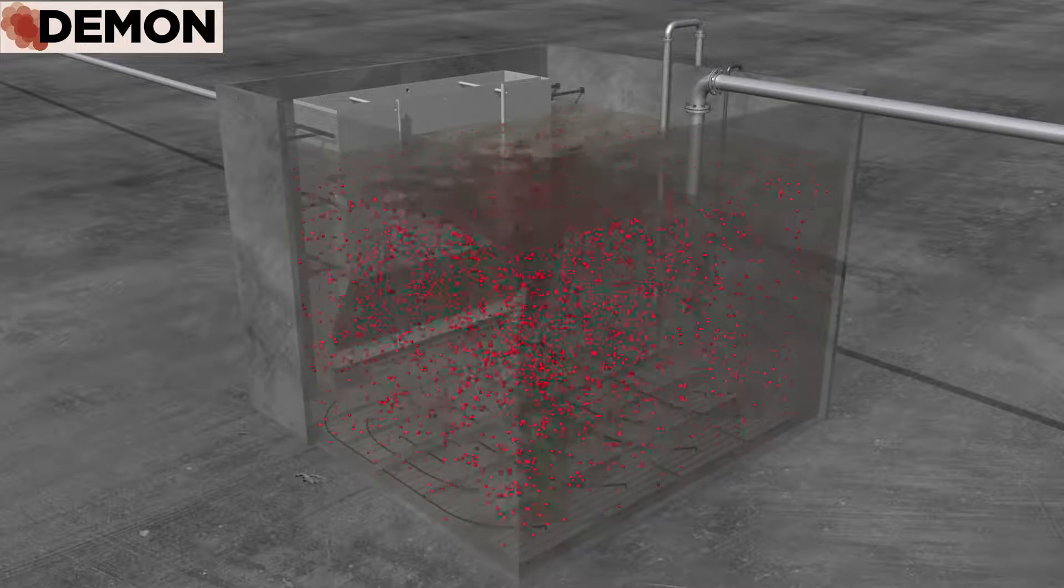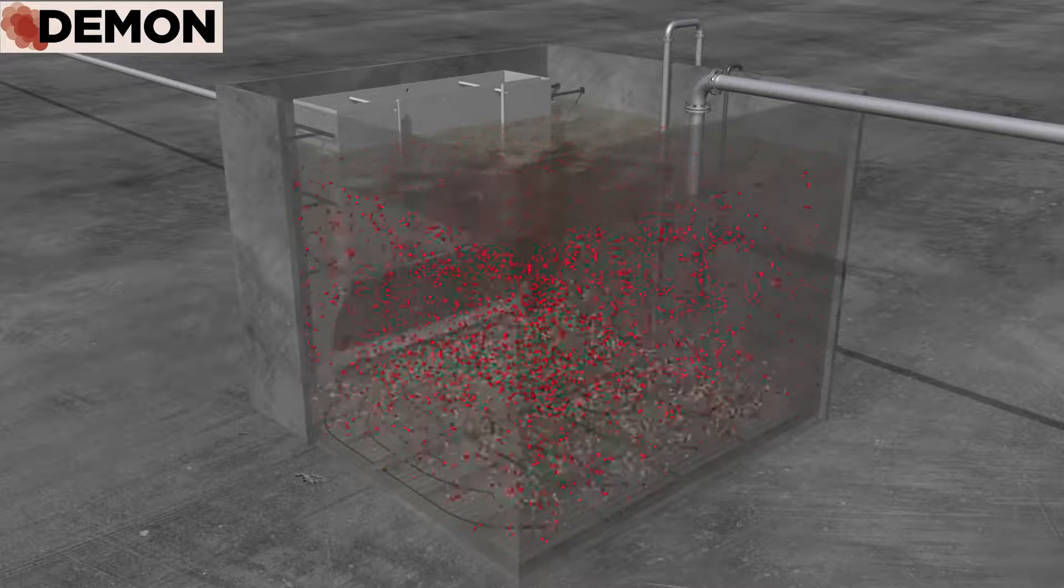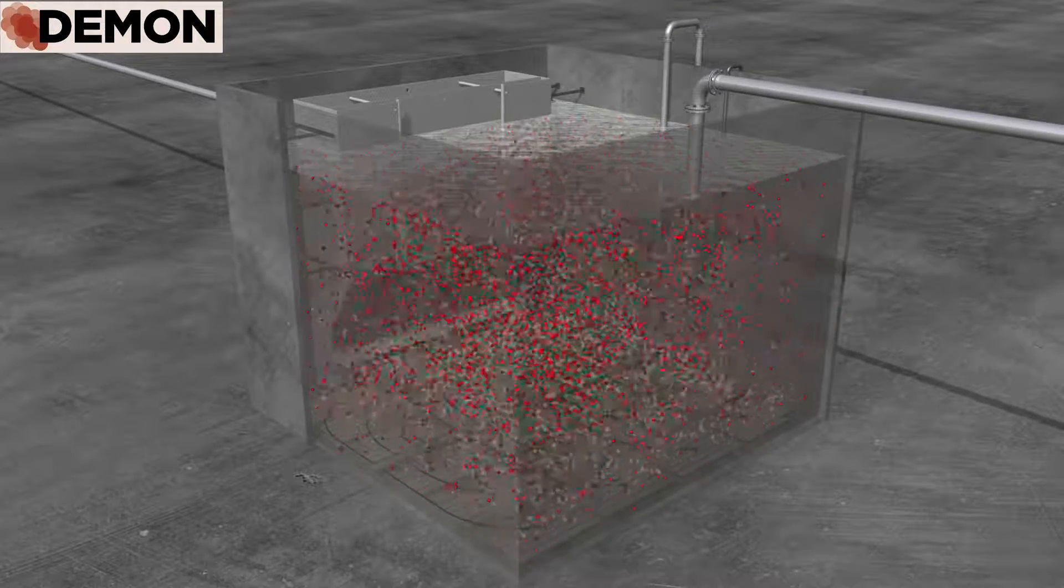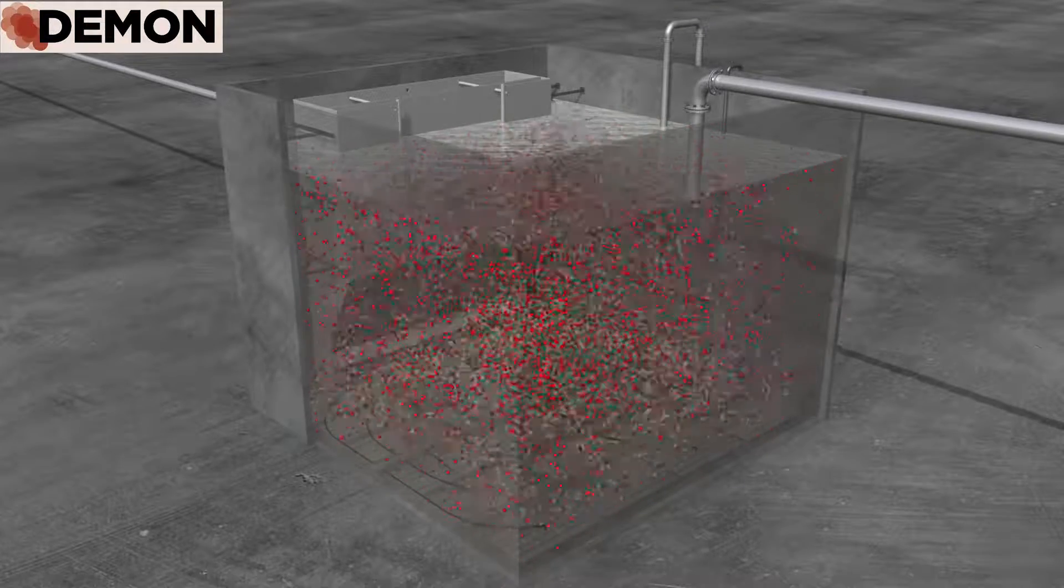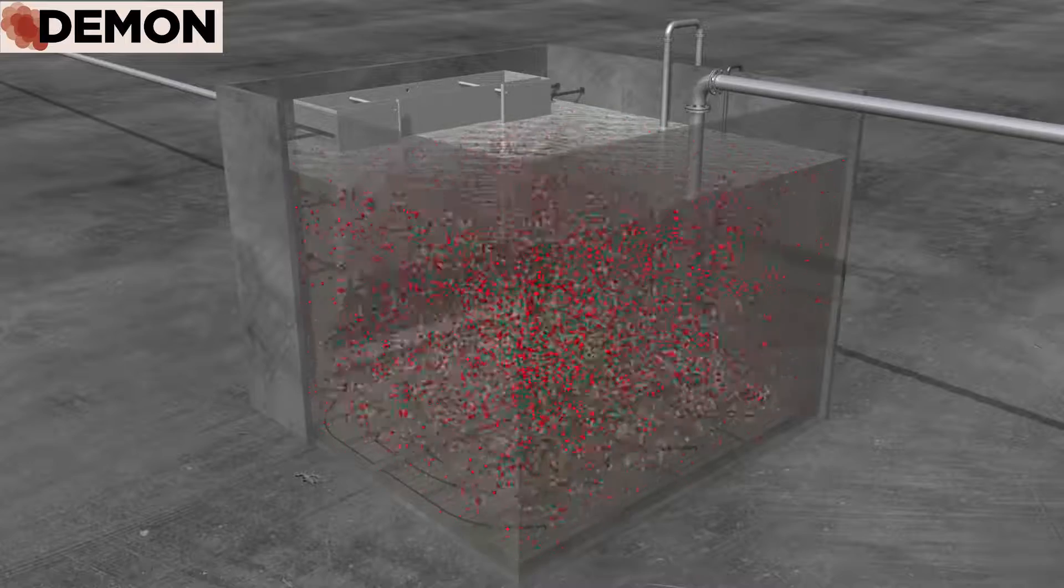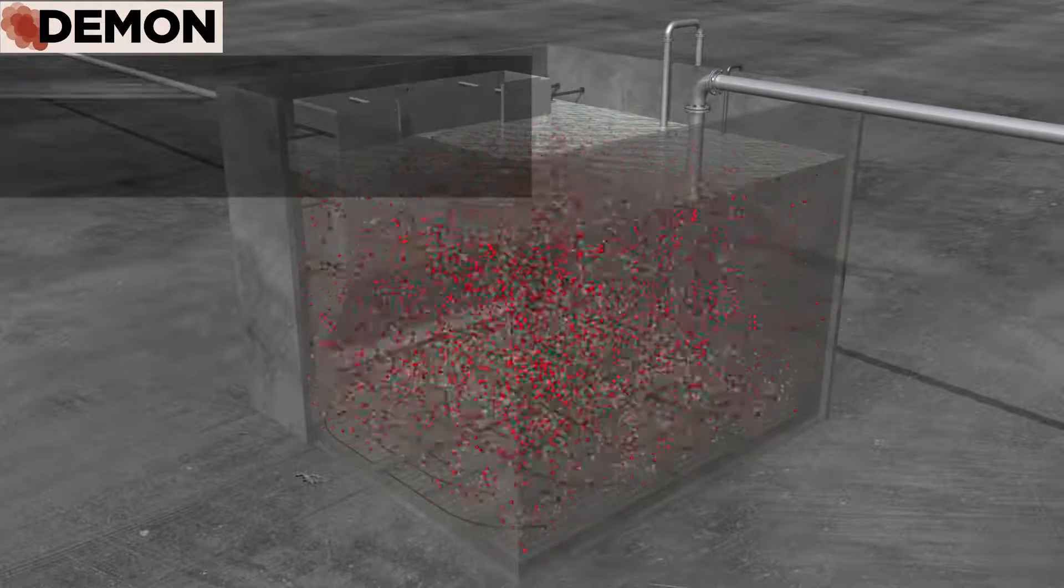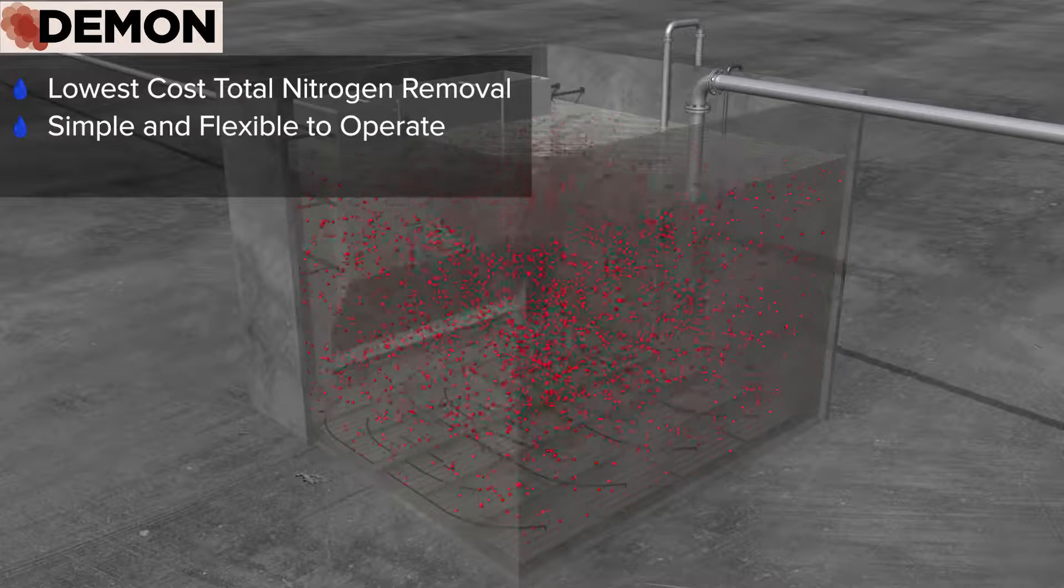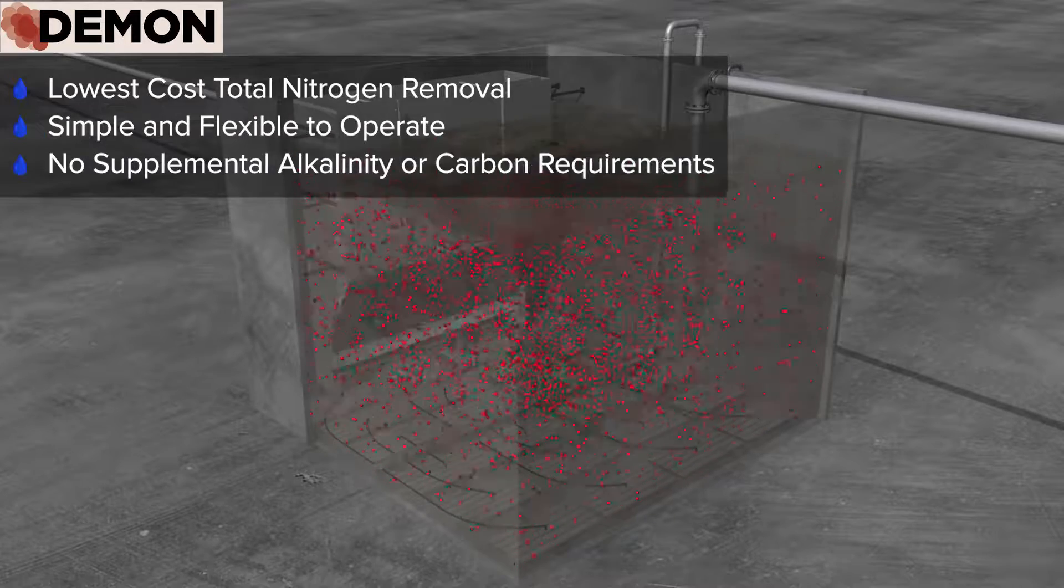high-strength ammonia return streams, thus significantly lowering the load on the mainstream biological process. With the specially designed pH control system, the Demon Animox process provides the lowest cost total nitrogen removal with simple and flexible operation and no supplemental alkalinity or carbon requirements.